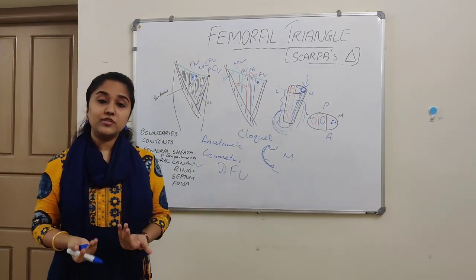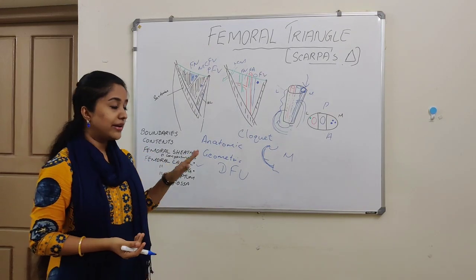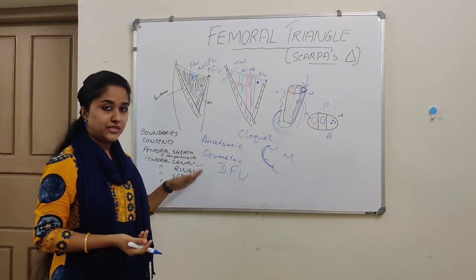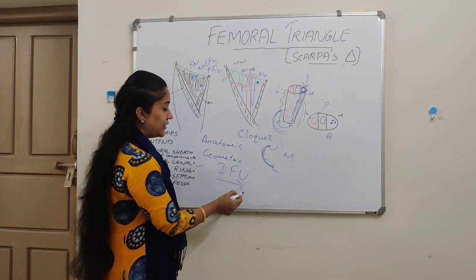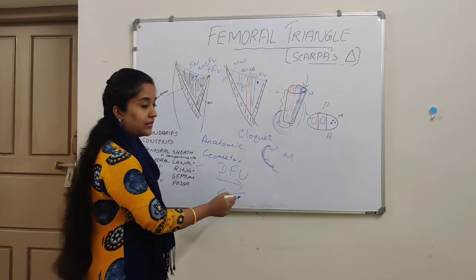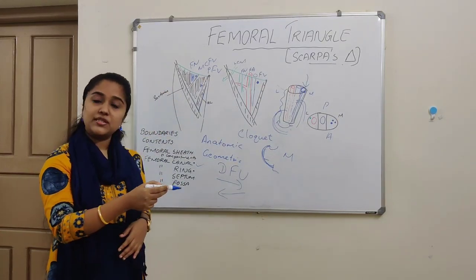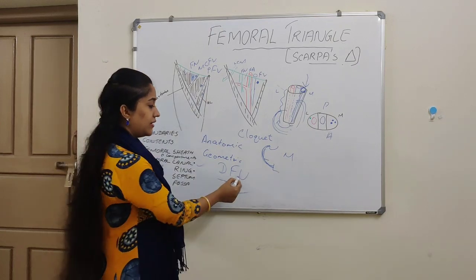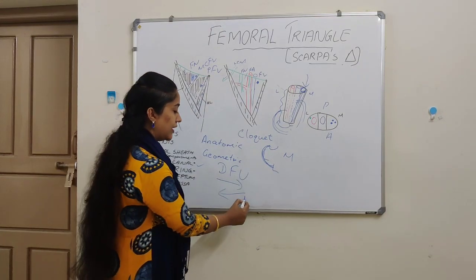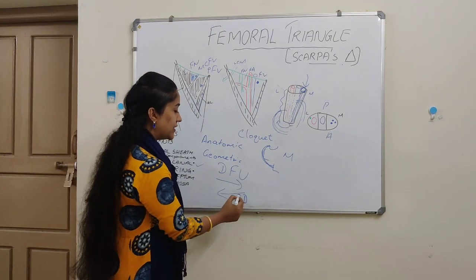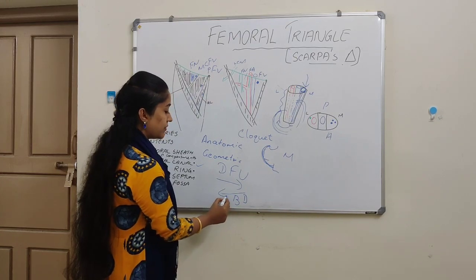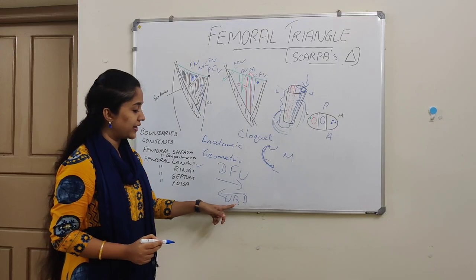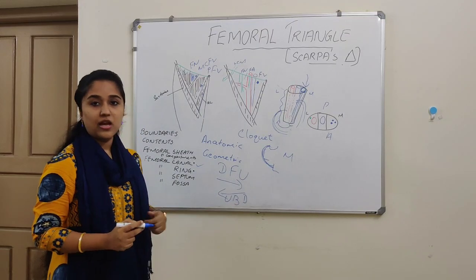In order to reduce the femoral hernia, you have to manually reduce it in the opposite direction. Since the direction of the hernia is downwards, forwards, and upwards, we have to reduce it in the opposite direction — that is downwards, backwards, and upwards.